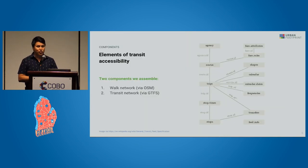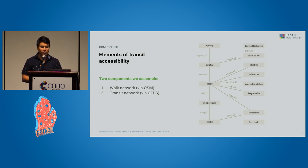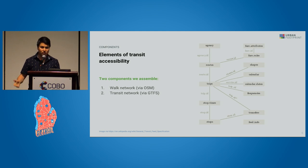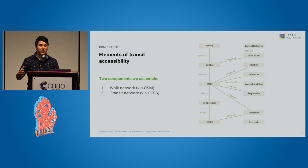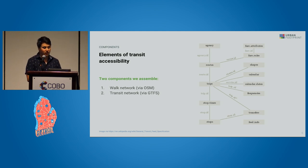There are two primary elements of transit accessibility. There is the walk network and the transit network. The walk network comes from OpenStreetMap. The transit network is based on GTFS — General Transit Feed Specification — which is basically a format for holding schedule information by a transit operator over a given area. It's a non-spatial or aspatial data set.